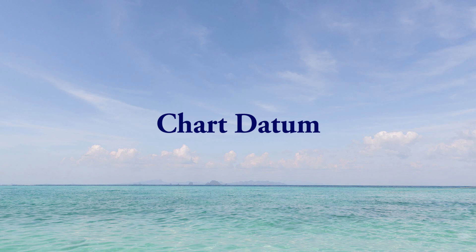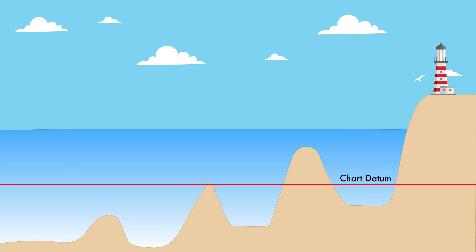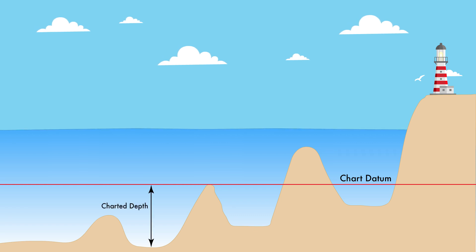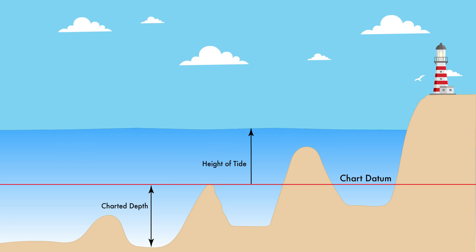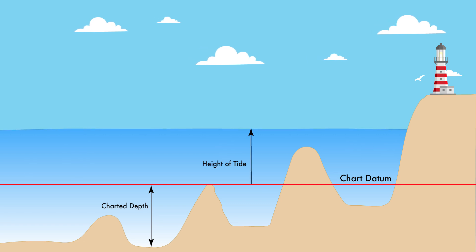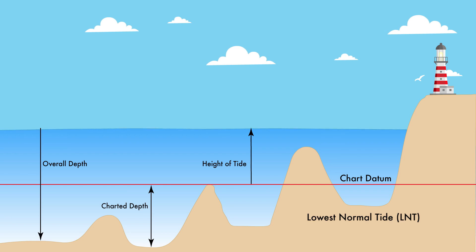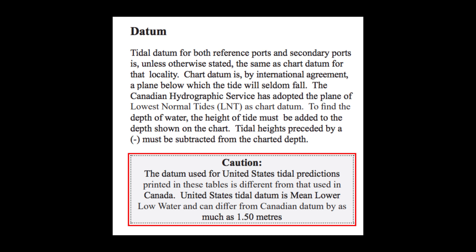Chart datum. This is the water level that depths or soundings displayed on a nautical chart are measured from. Different authorities use different data, so it is important to understand which datum your particular authority uses. In Canada, for example, the Canadian Hydrographic Service uses lowest normal tides as chart datum. United States tidal datum is mean lower low water, and can differ from Canadian datum by as much as 1.5 meters or 5 feet.